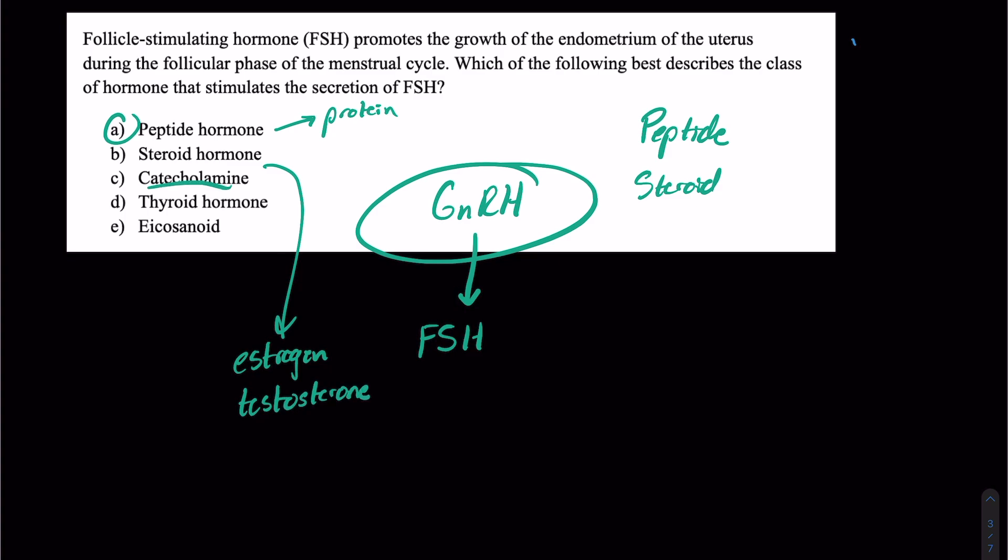Catecholamines are three main examples: dopamine, norepinephrine (also known as noradrenaline), and epinephrine (also known as adrenaline). Those are released primarily in the adrenal medulla, although some can be released as neurotransmitters in the brain. Thyroid hormone is released by the thyroid gland. Eicosanoids are lower yield for the MCAT.